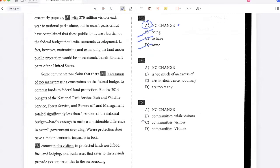Some commentators claim that there is an excess of too many pressing constraints on the federal budget to commit funds to federal land protection. So this is redundancy. Because I can see that excess and too many mean the same thing. So I don't need to say both. So option A is out. There is too much of an excess of, again, it's redundant. So B is out. In abundance too many, again redundant. So D is the best answer. Some commentators claim that there are too many pressing constraints on the federal budget.